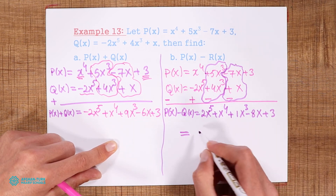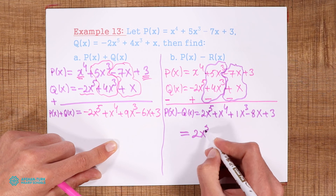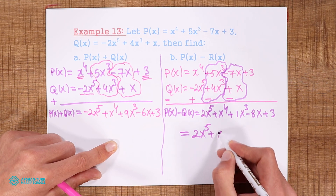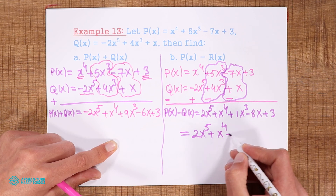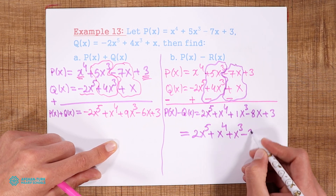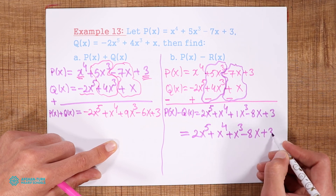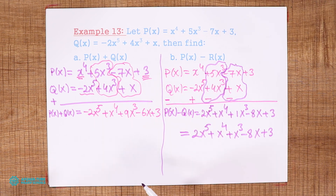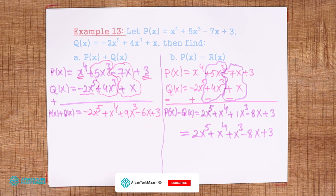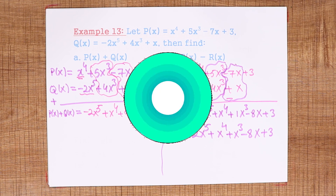So the result is: 2x⁵ + x⁴ + x³ - 8x + 3, which is the answer for the subtraction or difference of these two polynomials. These were some examples for addition and subtraction of polynomials. If you have any questions, you can ask me in the comments. In the next video we will talk about multiplication of polynomials. Thank you all.